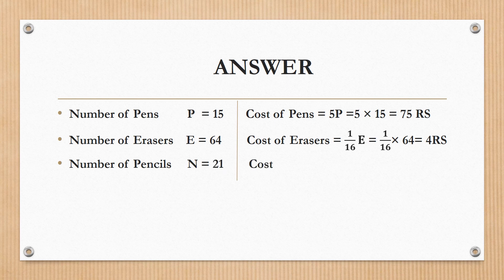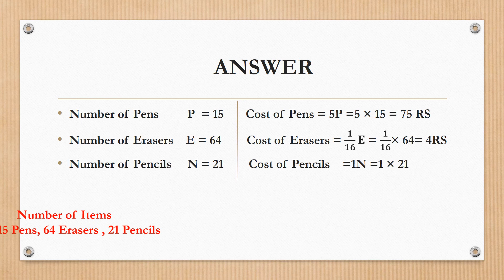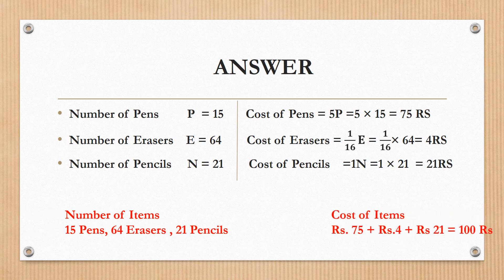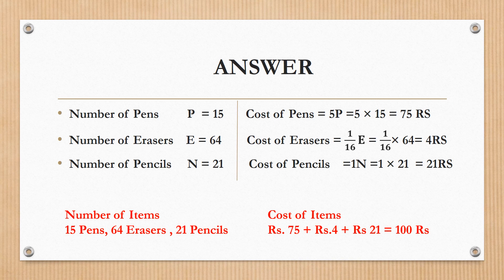Number of items and the cost of items both equal 100.